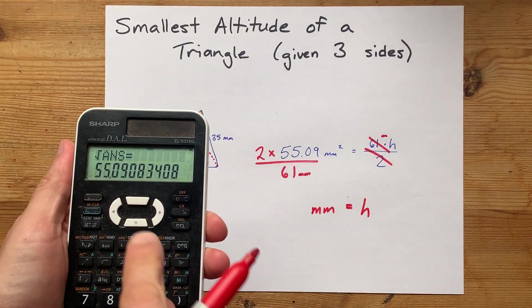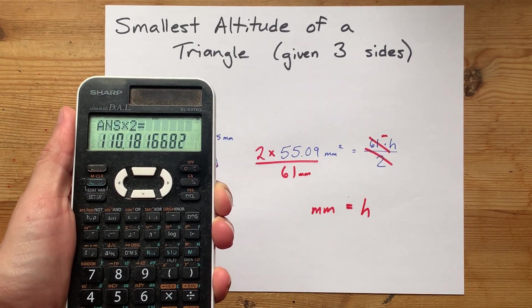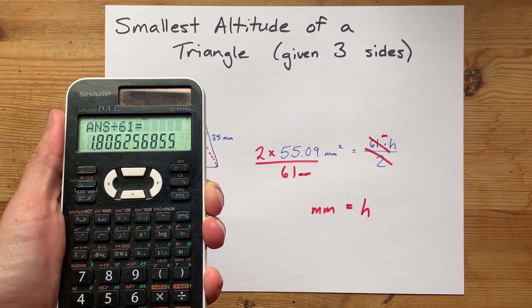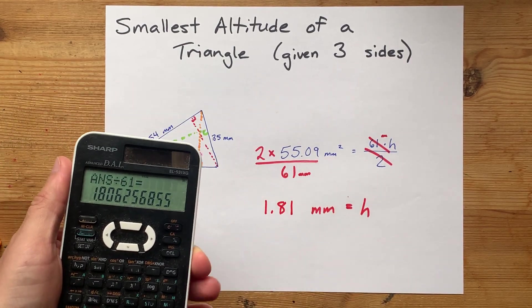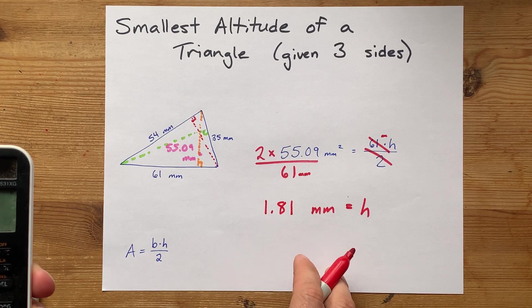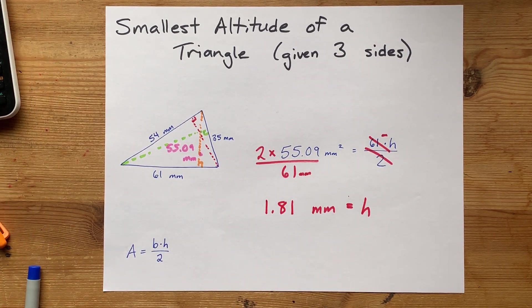Now, we've just got to do 55.09 times 2 and divided by 61. That gives me 1.81. So, apparently the smallest altitude here is a measly 1.81 millimeters. Cool!